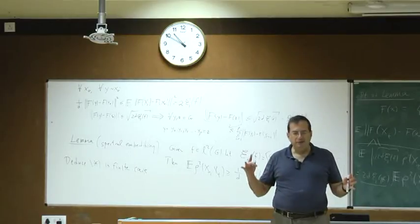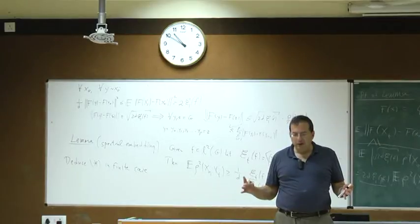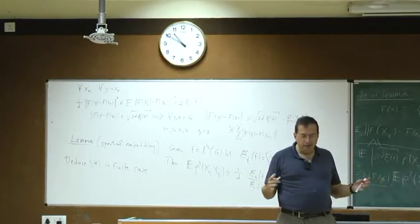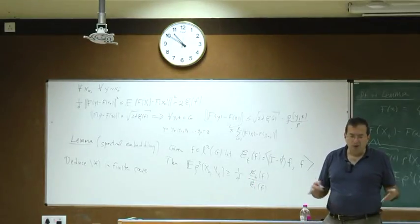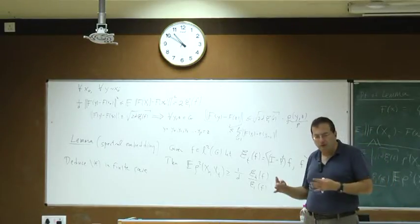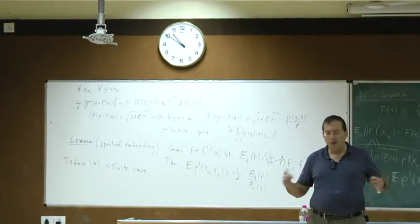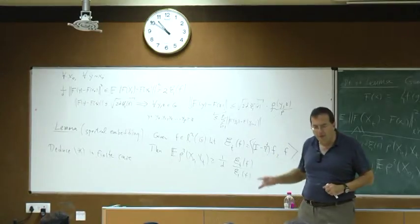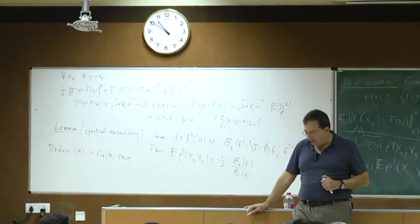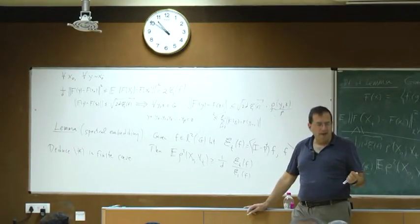Here I bounded from below the expected squared distance from X_0 to X_T. Often you're interested in bounding the distance, not just the square. If you try to apply this argument directly, you're going against the Cauchy-Schwarz inequality — you cannot directly infer a lower bound for the first moment from a lower bound for the second moment. However, using this remark, because we can relate it to a martingale and then use the Burkholder-Davis-Gundy inequalities, one can get from the second moment to a first moment bound. The details are in a paper with James Lee and a follow-up with James Lee and Charles Smart available on the arXiv.